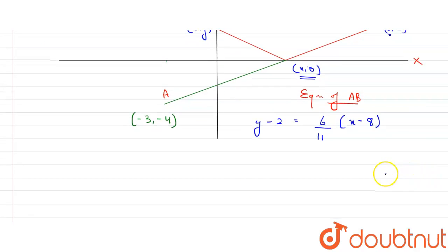Now let's solve this further. Here you can see this (x,0) coordinate is on the line, so value of x will be x here but value of y is 0, so it will satisfy this equation of line. Let's put y equals to 0 here. So what we'll get here: -2 equals to 6/11 (x - 8).